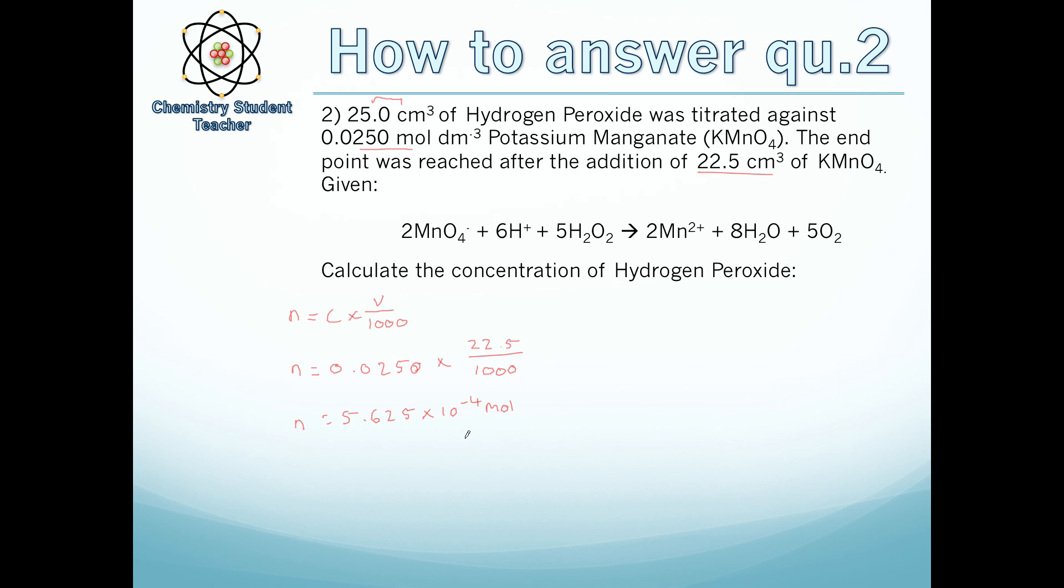We've now worked out how many moles of manganate has reacted. However, we want to know the peroxide concentration. As per the first question, look at the ratio. We've got 2 moles of manganate react with 5 moles of hydrogen peroxide. Therefore, we can divide by 2 and times by 5, or just times by 5 halves. That gives you number of moles of hydrogen peroxide to be roughly 1.4 × 10⁻³. I haven't rounded off yet - you try to keep it as exact as you can until the endpoint.